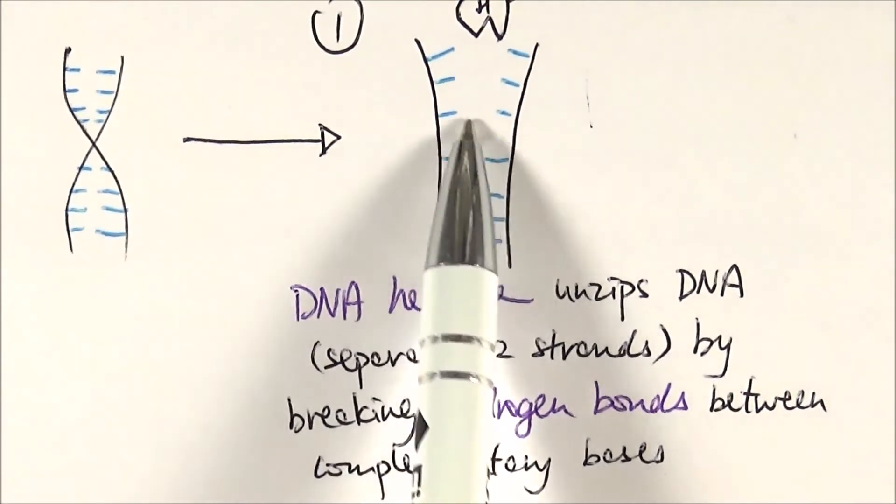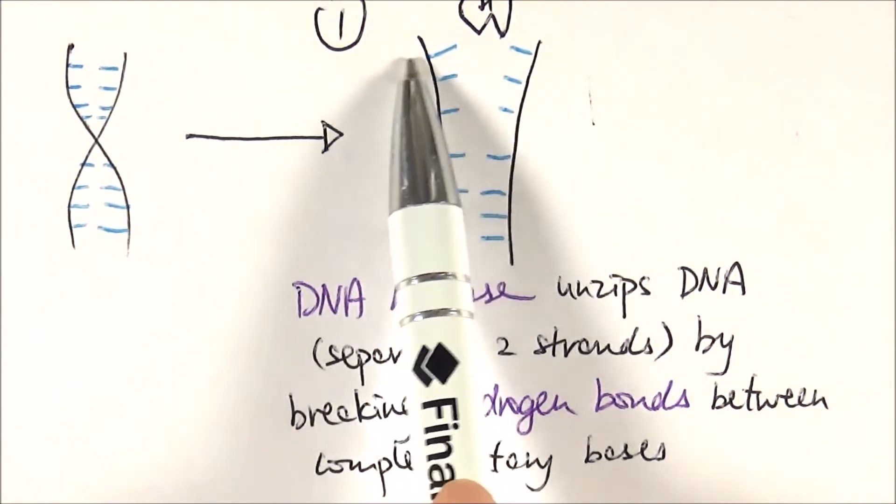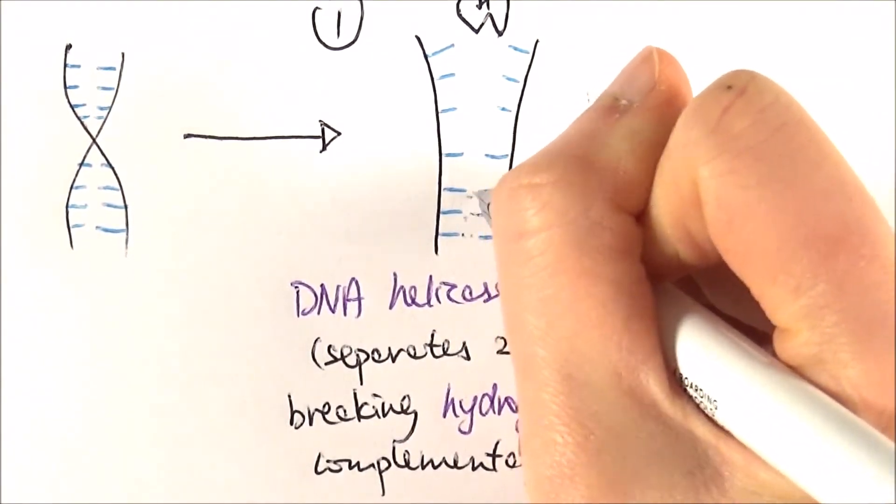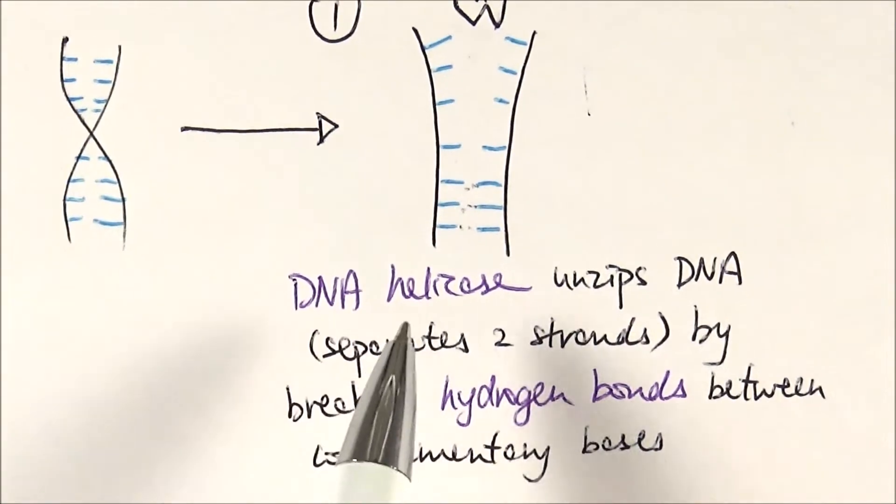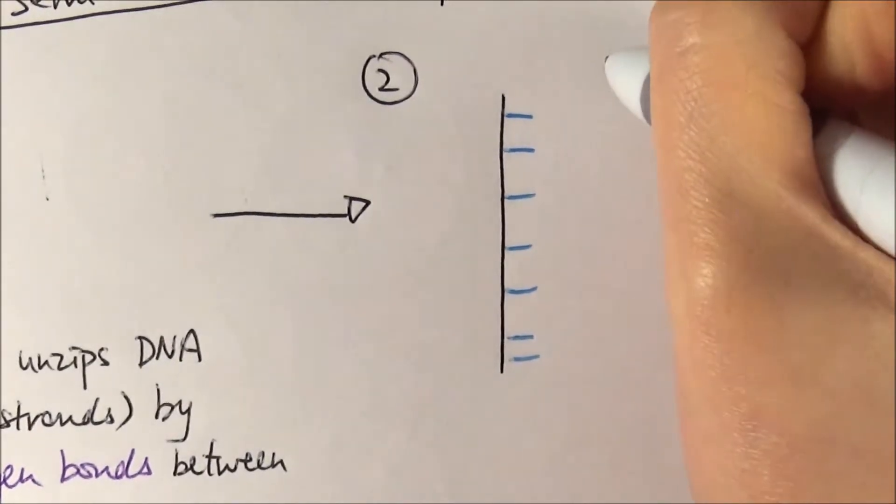DNA helicase unzips and unwinds DNA by breaking the hydrogen bonds between the complementary bases. Where they're still intact you can see the hydrogen bonds, and then it completely breaks them.